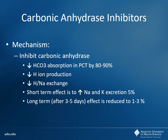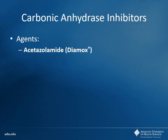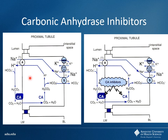Electrolyte changes with carbonic anhydrase inhibitors: short-term, you'll see some increase in sodium and potassium excretion, but long-term the diuretic effect is pretty minimal. They're not very effective as antihypertensive medications. Thiazides are the best diuretics for hypertension; loops are good for fluid removal but not long-term blood pressure control. The main agent is acetazolamide (Diamox).